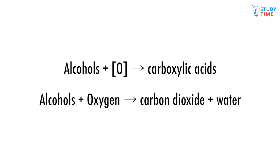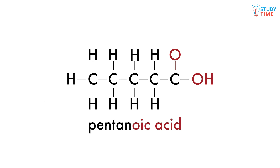Carboxylic acids are more like a complicated version of an alcohol. They have the hydroxyl functional group, but also a double-bonded oxygen group. Together, we call these the carboxyl group. Carboxylic acids use the suffix "-anoic acid", and because the carboxyl group can only occur on an end carbon, we don't have to worry about giving a carbon location.